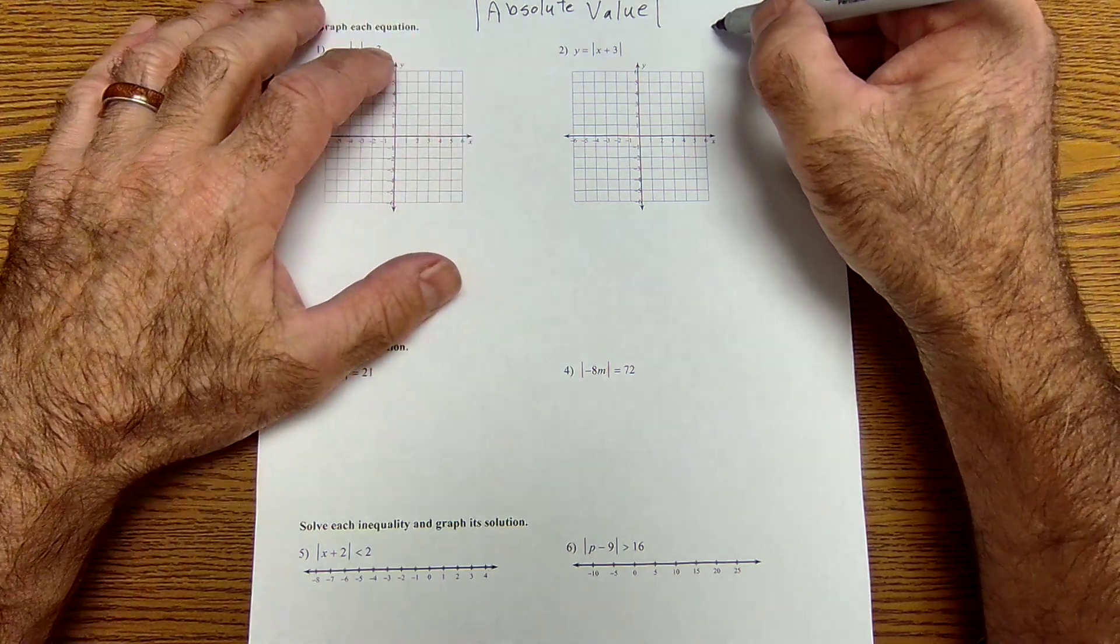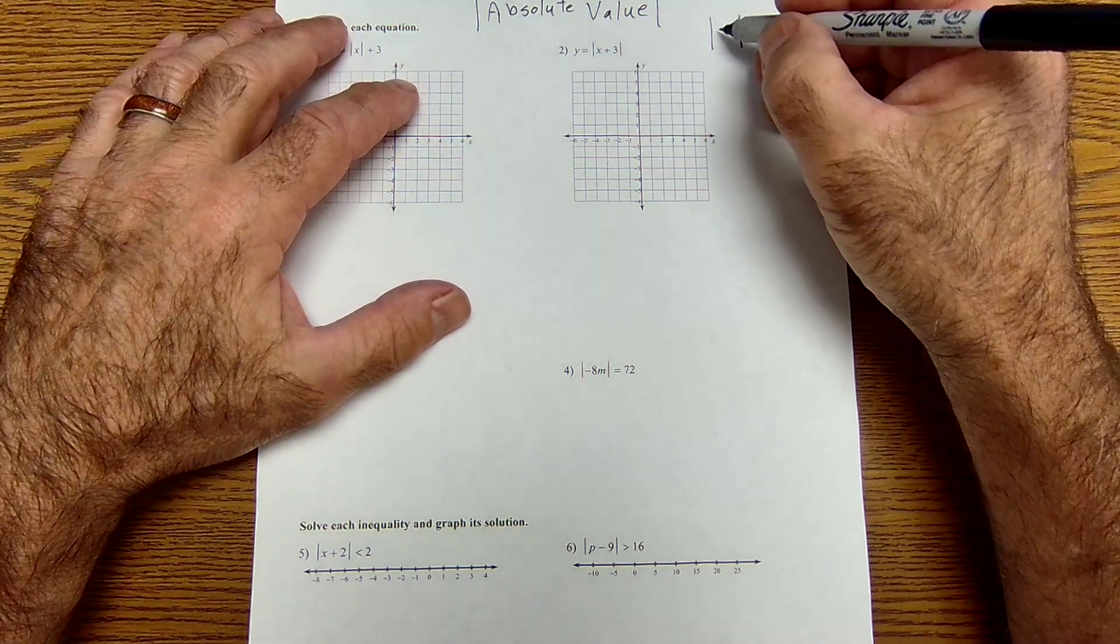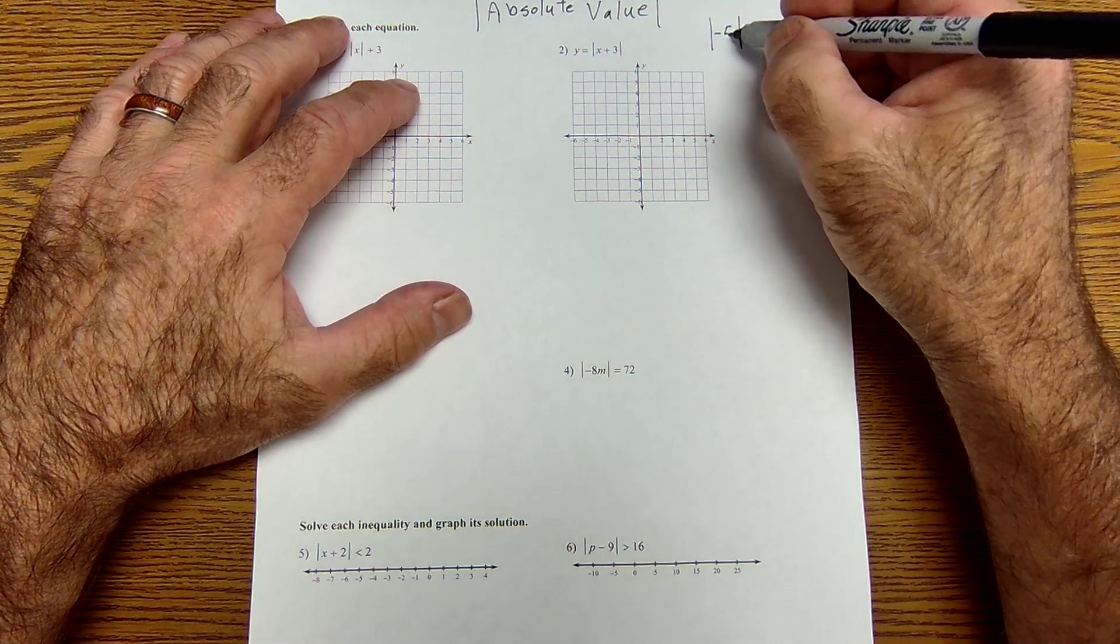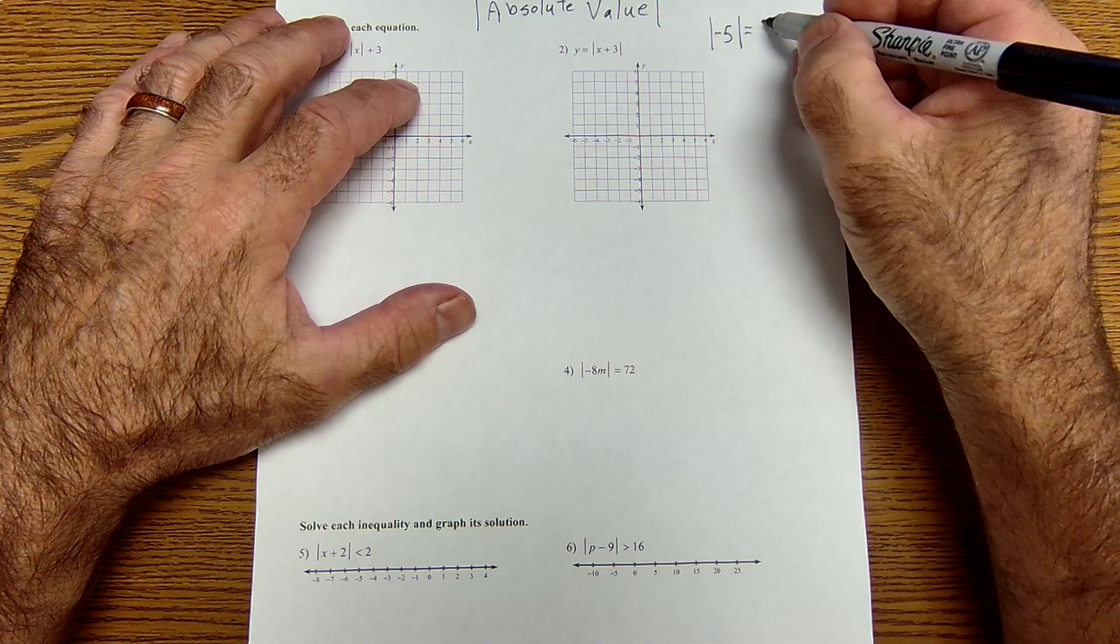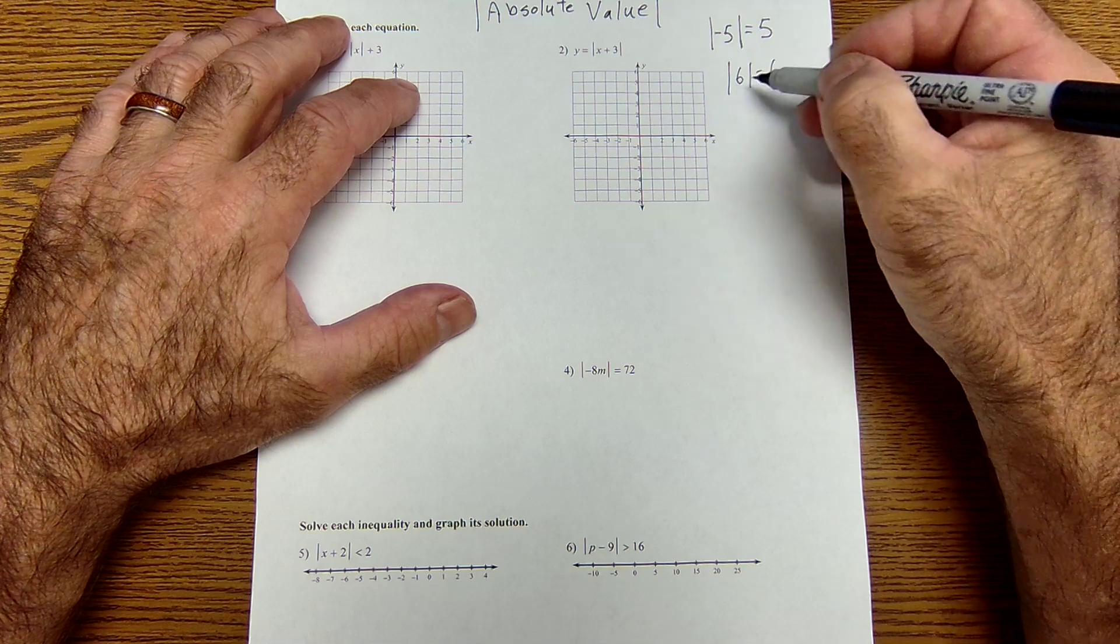All an absolute value is is these straight bars right here. And it says everything inside of those bars becomes positive. So if I have absolute value of negative 5, that's just equal to 5. If I have absolute value of 6, that just stays a 6.